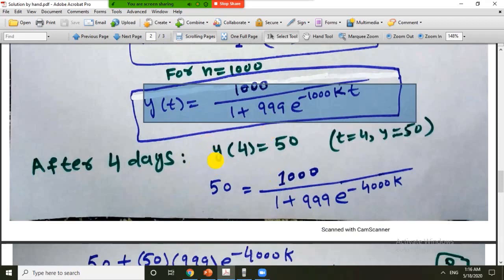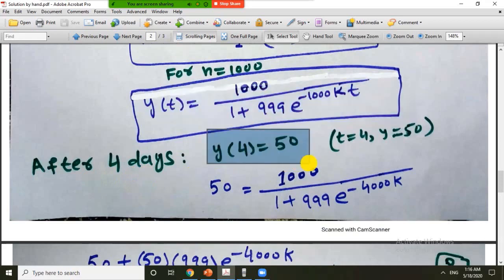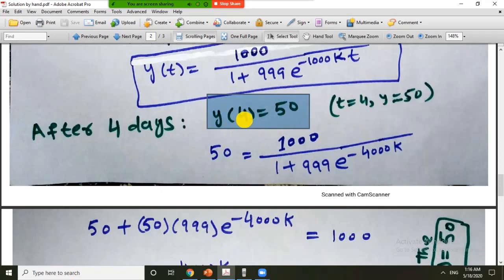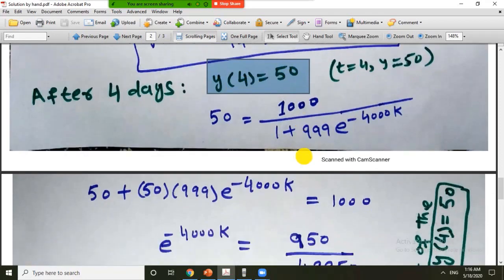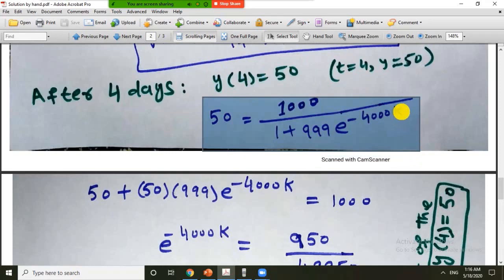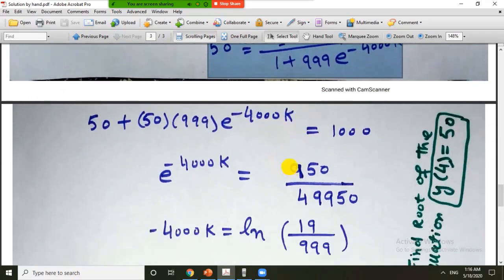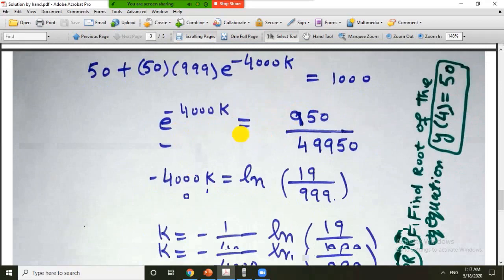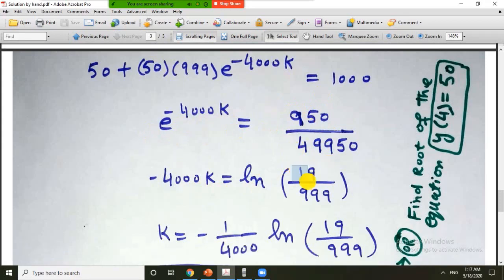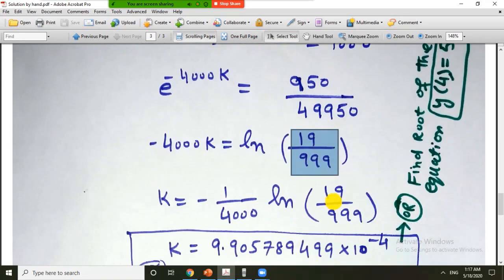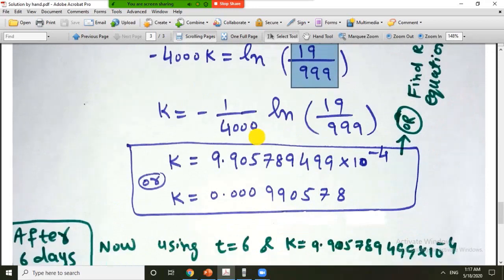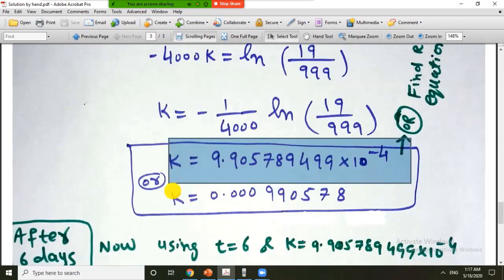Now the second condition or the extra condition was after 4 days y of 4 is equal to 50. This means that we have to put t is equal to 4 and y is equal to 50 and then we have to find the rate k. So we can find it by calculator by cross multiplication and then we can write this is minus 4000k equal to natural log of this expression. After simplification it is 19 by 999. By using the calculator we can find the value of k.